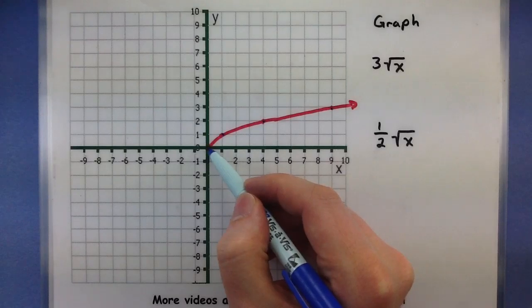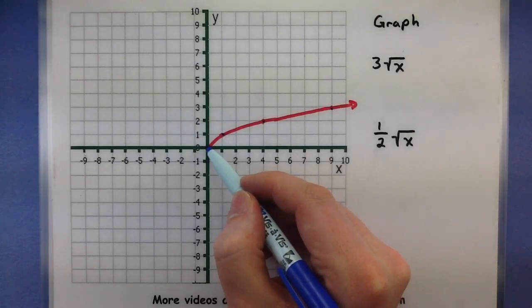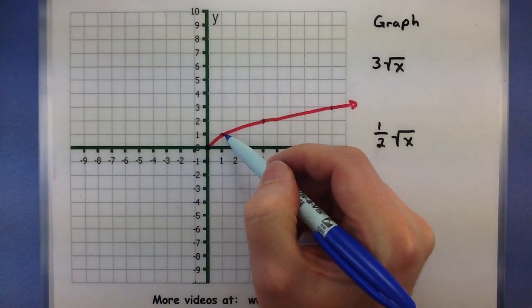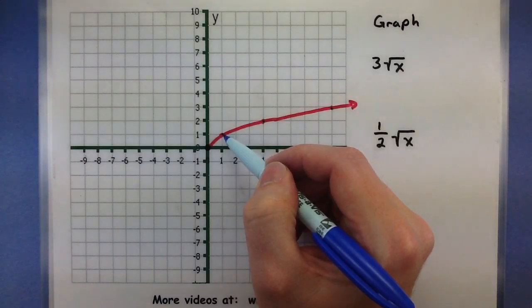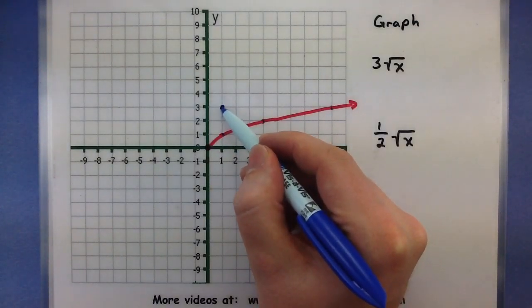Let's start at 0, 0. The y value here is 0, 0 multiplied by 3 is still 0, so we'll put that in the same spot. Moving on. The y value here is 1, 1 multiplied by 3 is 3, so we're going to put that at 1, 3.